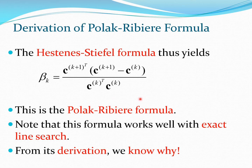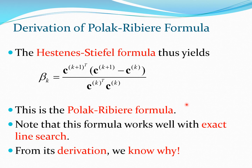The Polak-Ribière formula works well when doing an exact line search, which is precisely why this derivation required invoking the exact line search criteria to zero out one of the denominator terms. We now proceed to further simplify this formula to obtain the Fletcher-Reeves method.